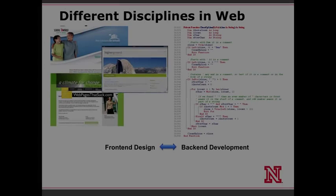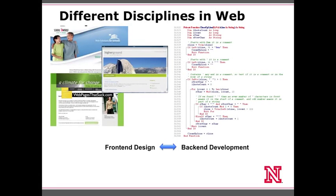There are basically two disciplines in web development. Front-end design deals with graphics, colors, layout, style — how does the page look, feel, and respond. Back-end development is essentially how you make the front-end design look the way the designer wants — how do you write the code to make the layout look correct, make the colors right, and make everything respond the specific way it's supposed to.